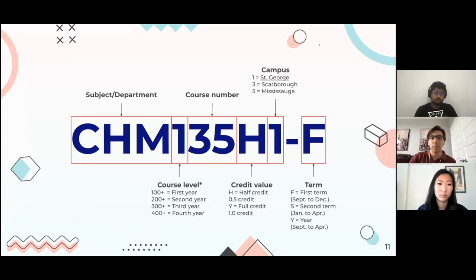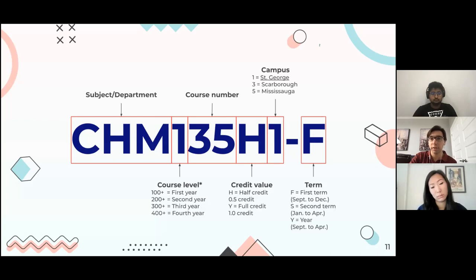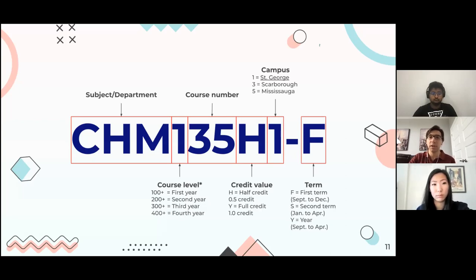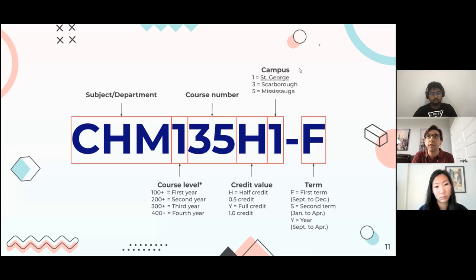Here we have a detailed breakdown of what a course code entails. The first part is the three-letter code, which indicates which department the subject belongs to — for example, CHM stands for chemistry. The next number indicates the level: 100 level is usually a first-year course, 200 level is second year, and so forth. But it's not restrictive — you could be in first year and take a 200 or 300 level course if you have the requirements. For example, in my first year I took Spanish 300 because I had taken the previous levels before.